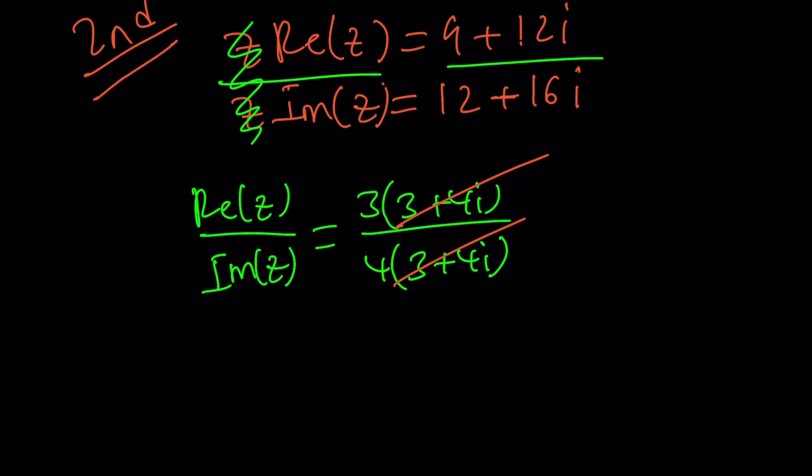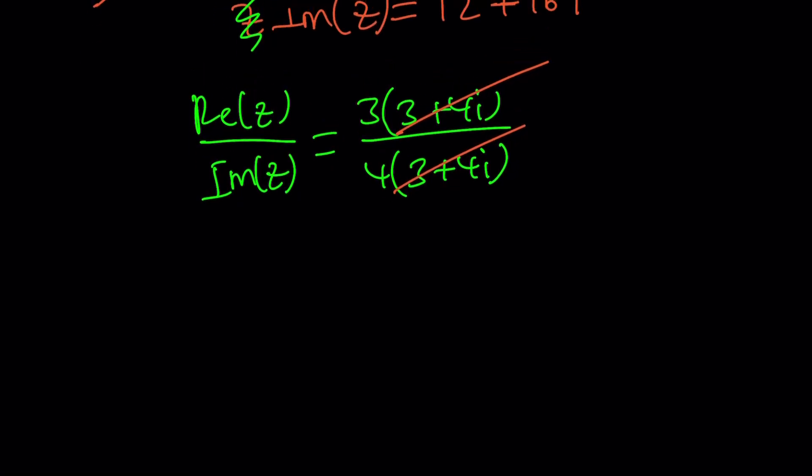So there's a ratio between the real part and the imaginary part so that this equation or the system is satisfied. Since our real part is proportional to 3 and imaginary is proportional to 4, we can write it as follows. Real part let it be 3k and imaginary part let it be 4k. So that the 3 to 4 ratio is maintained.